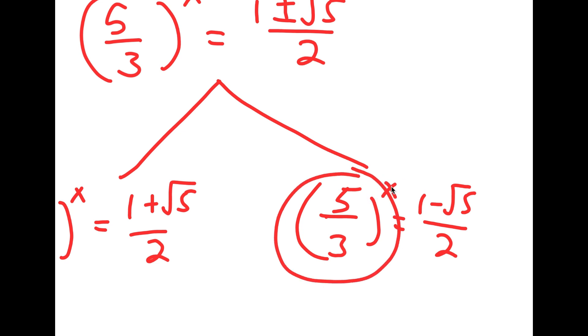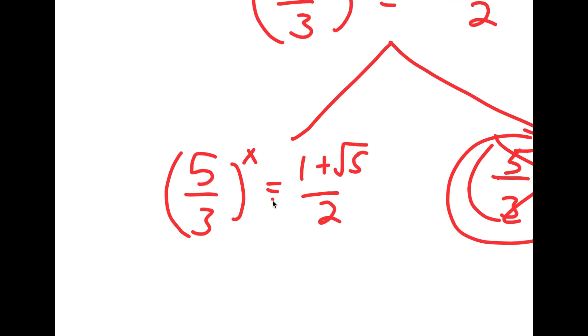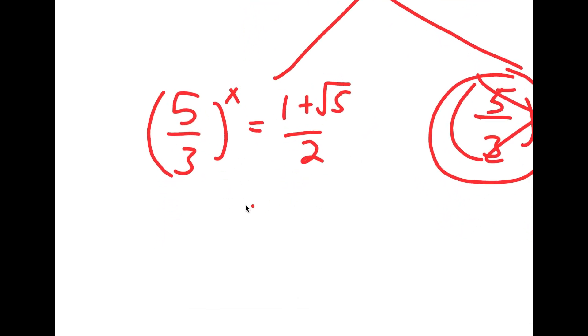You can't take the power of a positive number and make it equal to a negative number. So there is no solution for 5 over 3 to the power of x equals 1 minus the square root of 5 over 2. Now for 5 over 3 to the power of x equal to 1 plus the square root of 5 over 2, I'll proceed to solve.